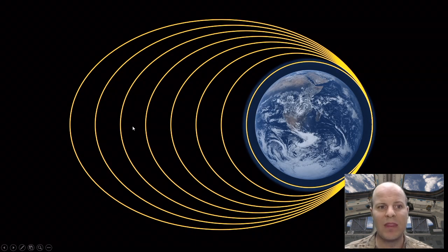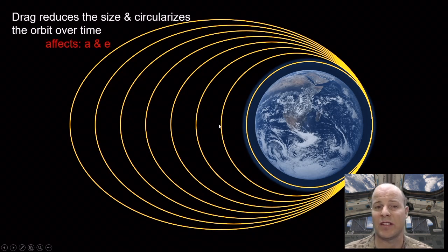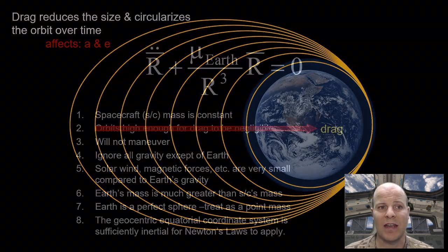but its orbital eccentricity, its shape, also changes as well. So drag tends to both reduce the size and circularize our orbit over time, changing both A and E.